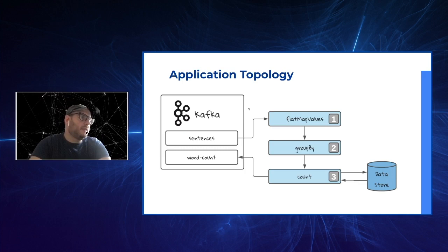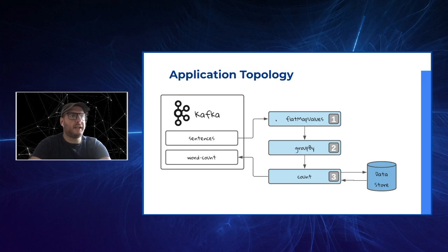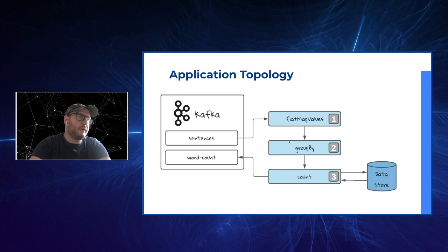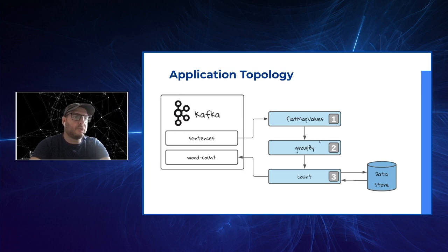We're going to be streaming the sentences topic into our application. Then we're going to apply the flatMapValues operation — what this operation does is map an entry into multiple entries. So in our case, one sentence will be mapped into multiple words. Then we're going to apply a groupBy operation, which allows you to group different entries by a value — we'll use it to group together all words that are the same. Finally, we'll count every word, store that into a data store, and then stream the result into our WordCount topic.